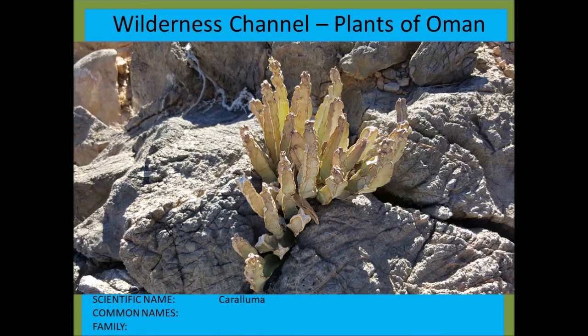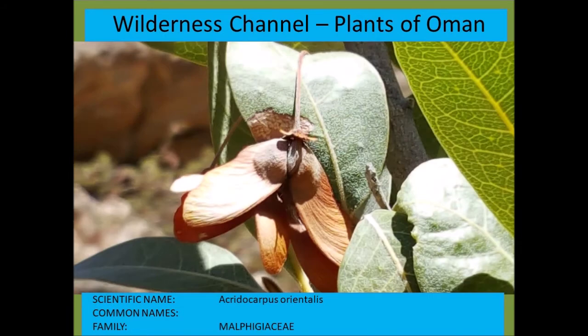Caralluma — supposedly edible. Acridocarpus orientalis from the Malpighiaceae — really interesting trees with wing-like fruits, of which I've found only a handful of specimens in Oman.